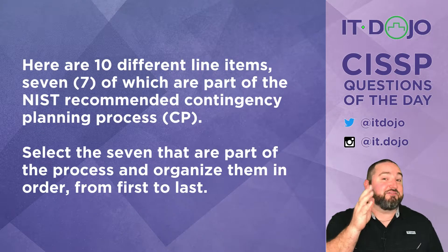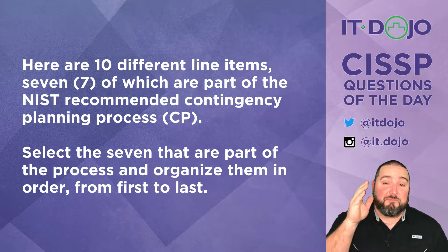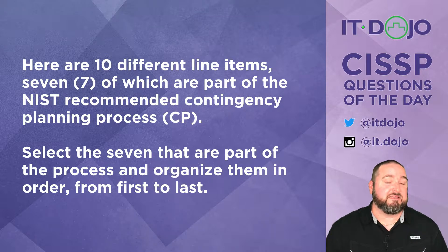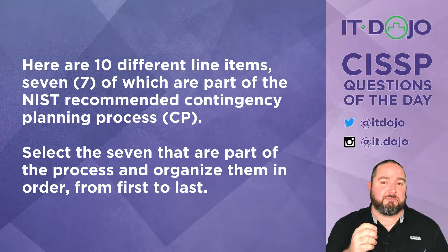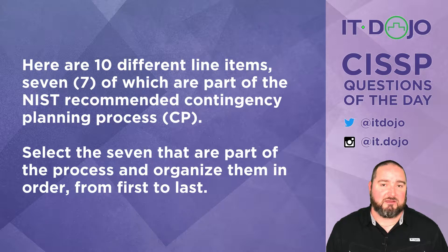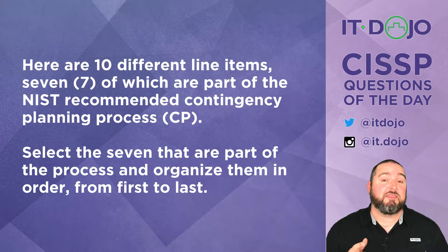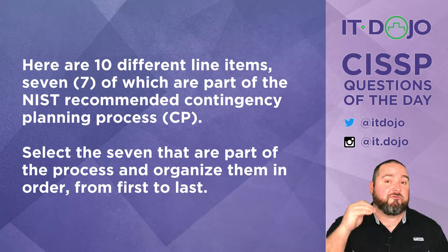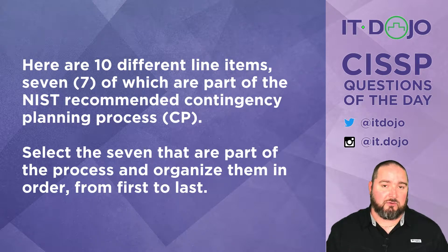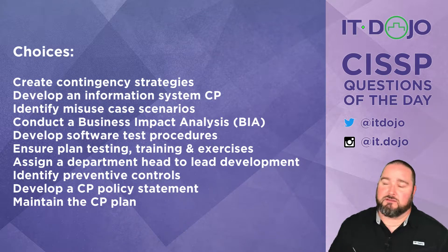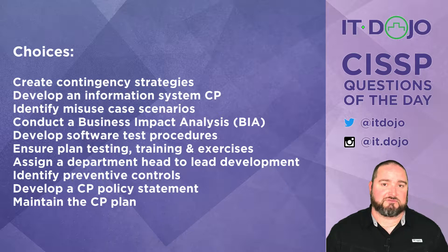Here comes question number one. This question sucks. Here's 10 items. Seven of them are part of NIST's contingency planning process — the recommended steps you would take in contingency planning and developing a plan. I want you to pick the seven that are part of the plan and then organize them from beginning to end in order. Go ahead and click pause, hate me while you do it, and when you're ready click play and I'll break down the list for you.